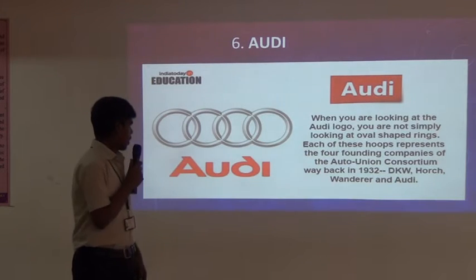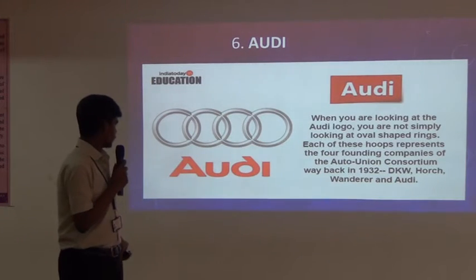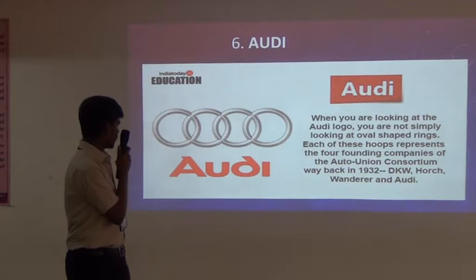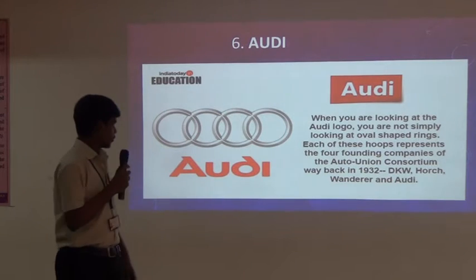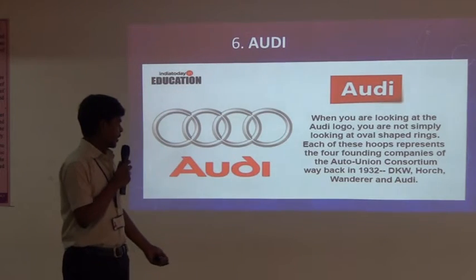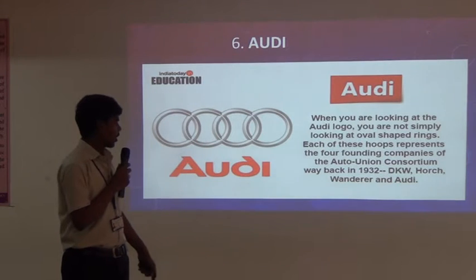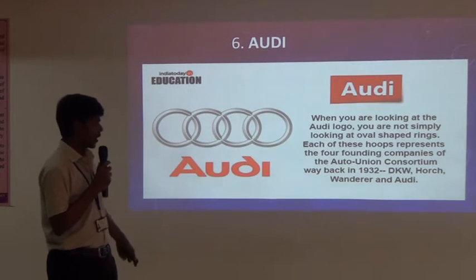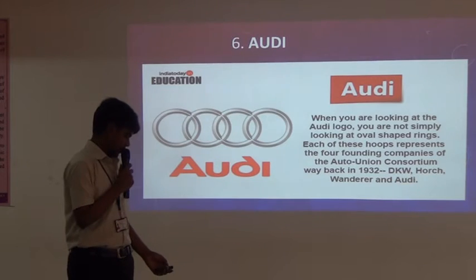Coming to Audi — you can see the four circles intersecting with each other. These four circles represent four companies: DKW, Horch, Wanderer, and Audi. These four companies together developed into the Audi company.